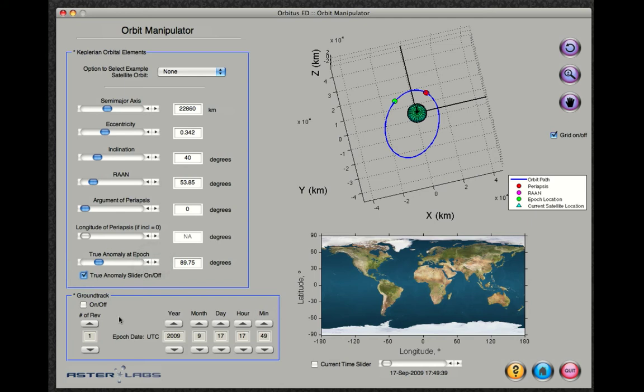In addition to this, you can turn the ground track feature on. This will plot the satellite's ground track in the figure in the lower right-hand corner.